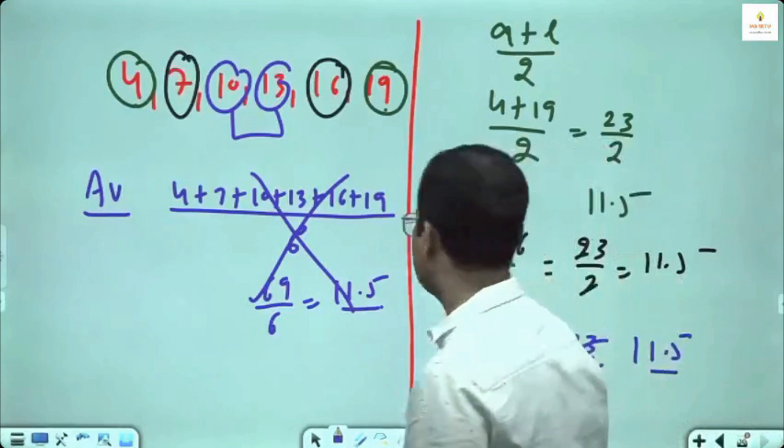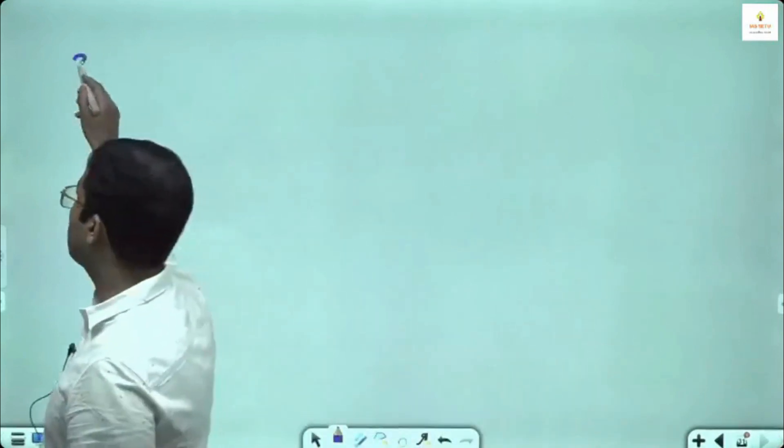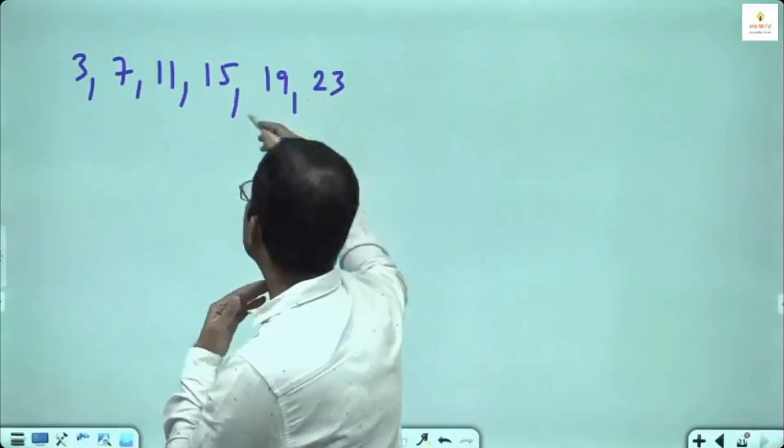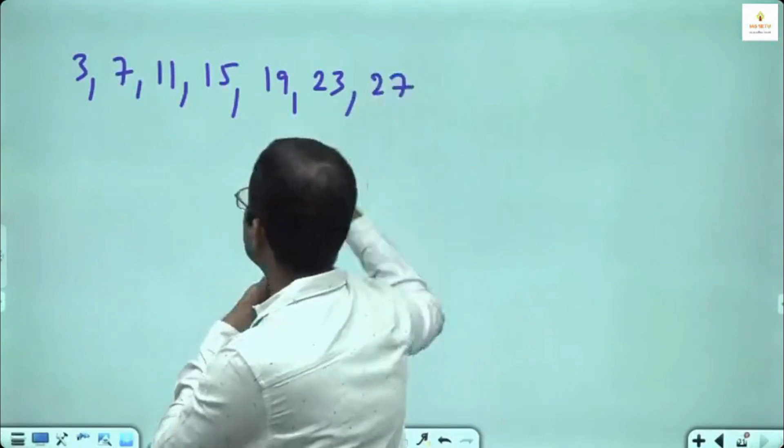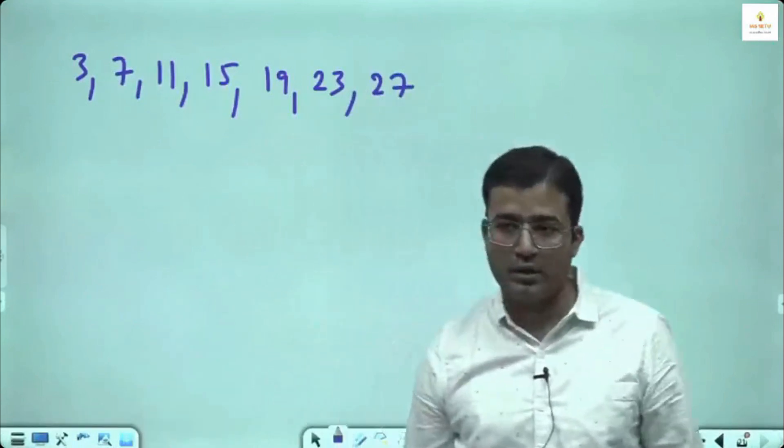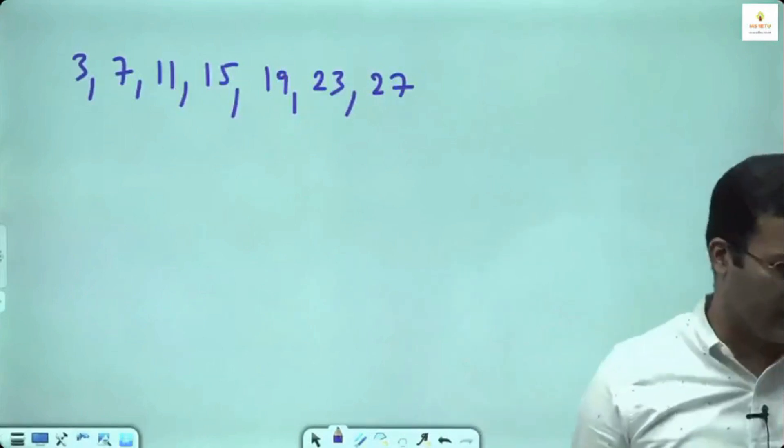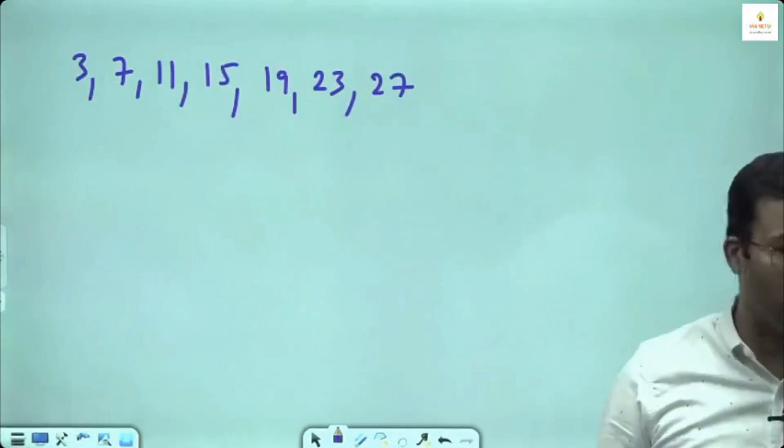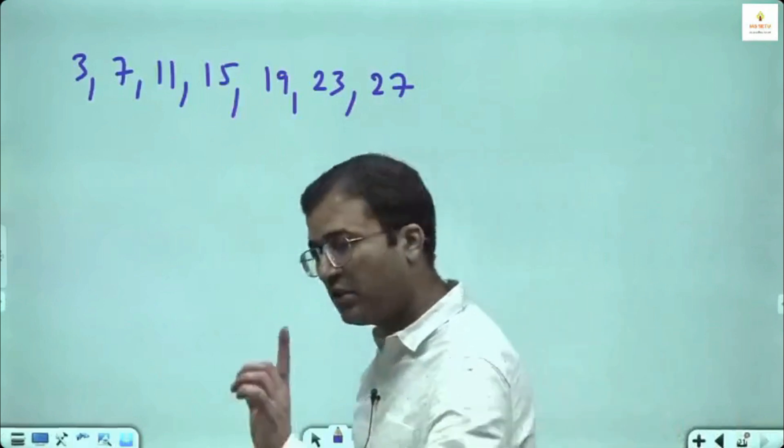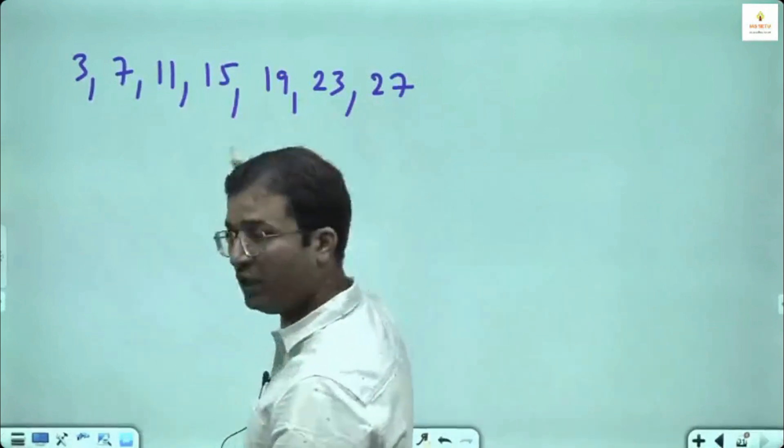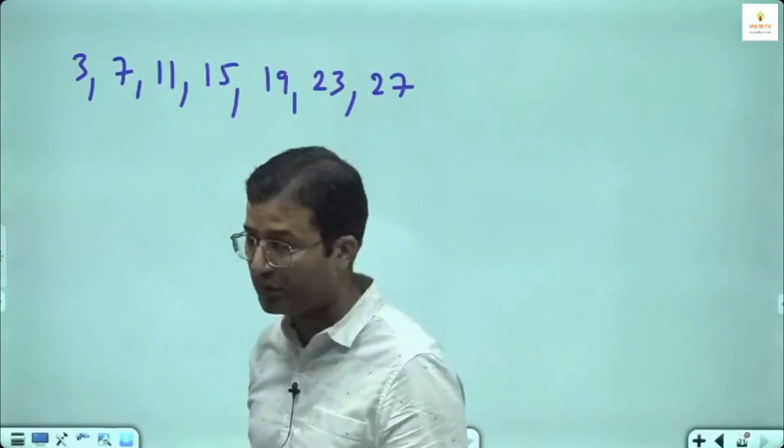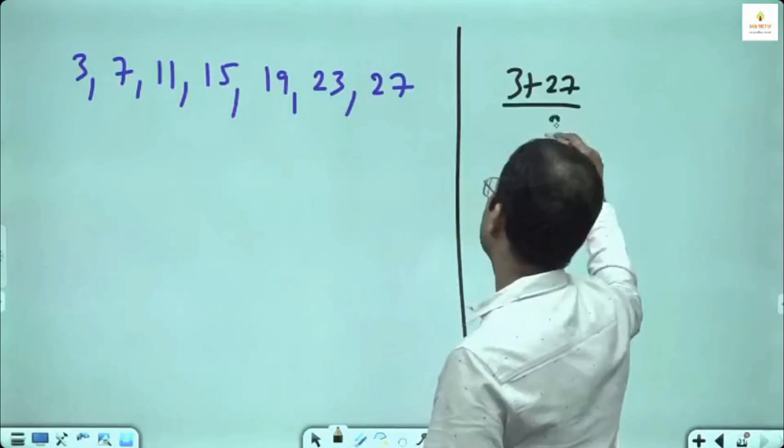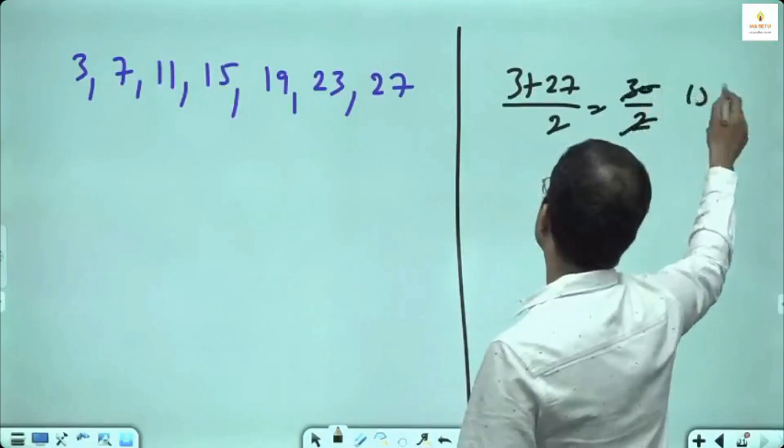I take 3, 7, 11, 15, 19, 23, 27. No need to count how many terms are there. But only thing you have to check that this is AP. Common difference is 4, 4, 4, 4, 4, 4. If I ask you average, one method is you take total divided by number of terms, but that is time consuming. We have an alternate method: first term plus last term divided by 2, 30 divided by 2 is 15.